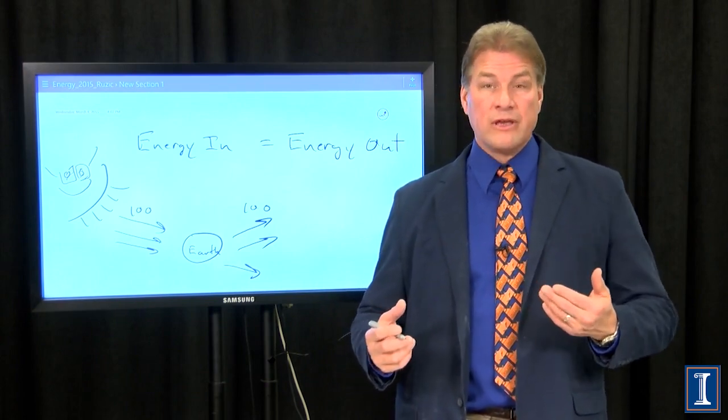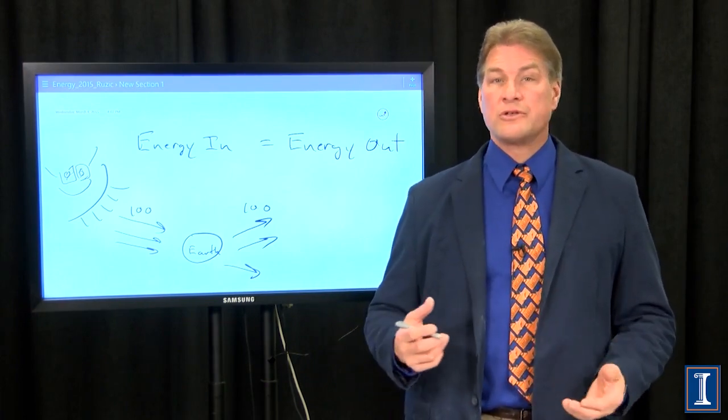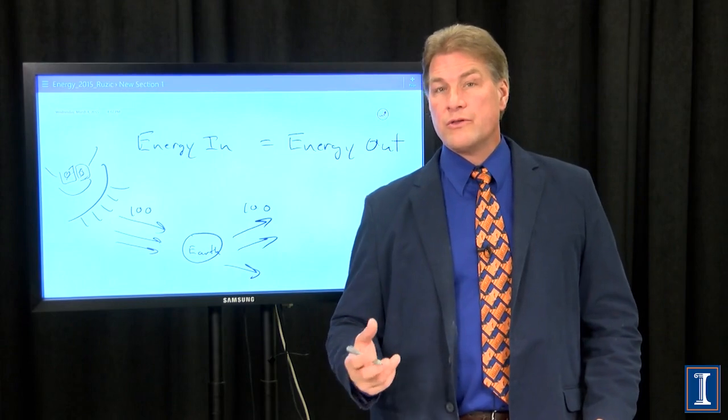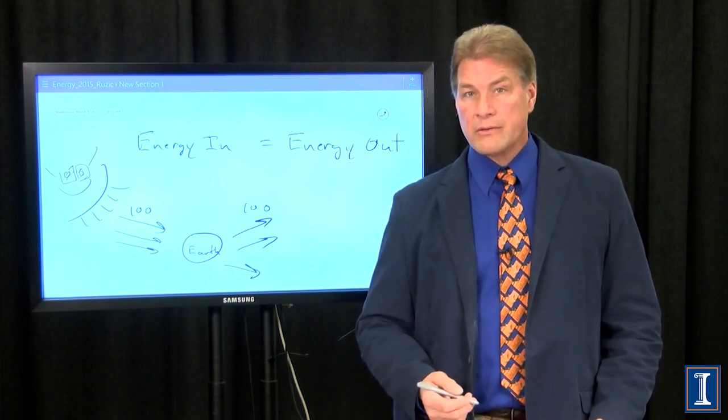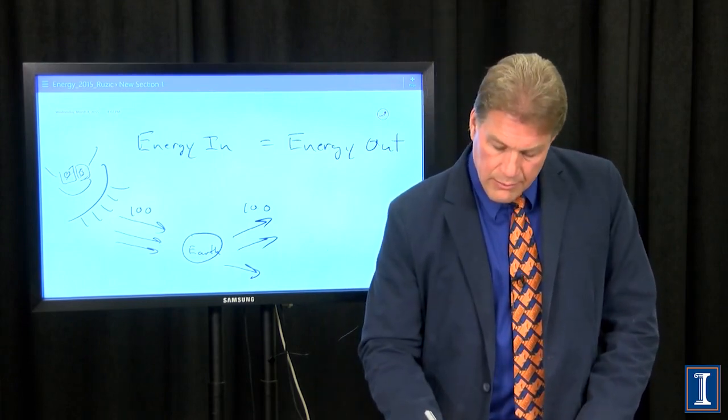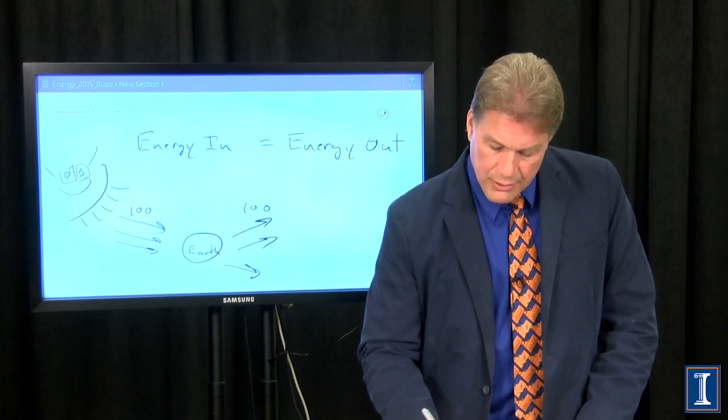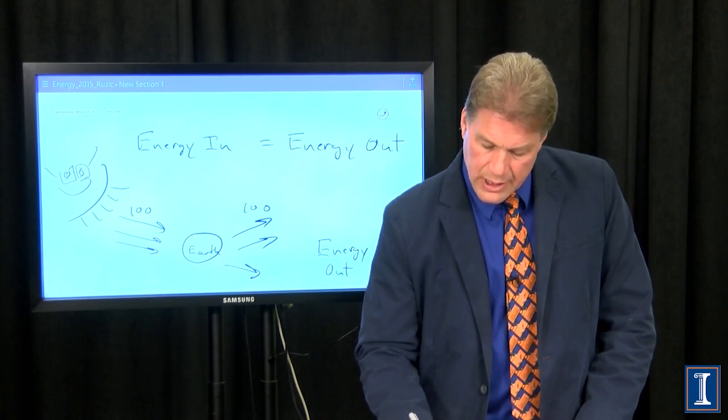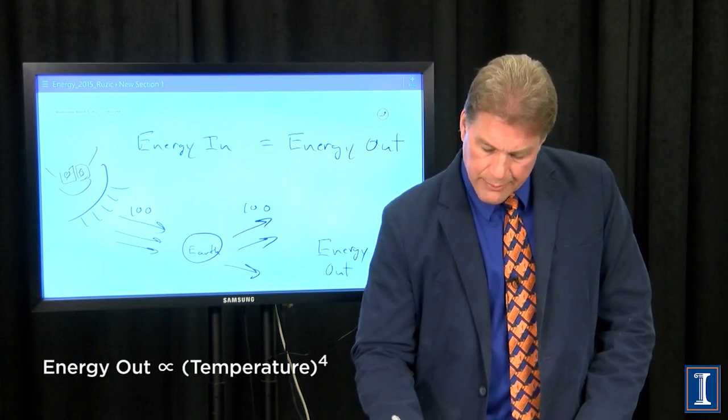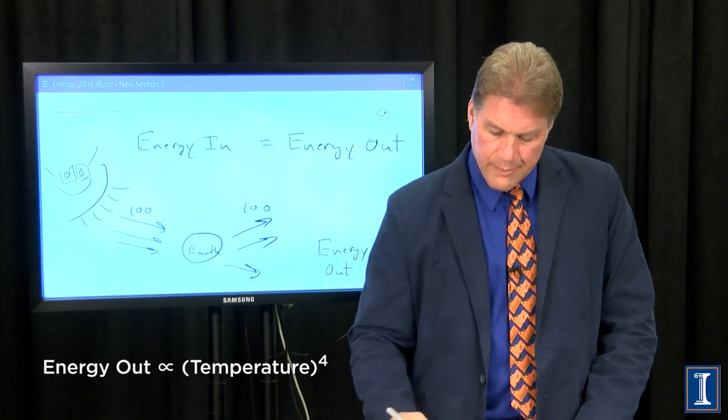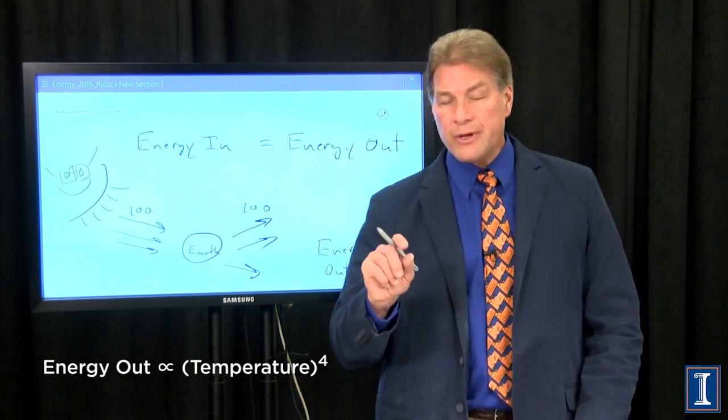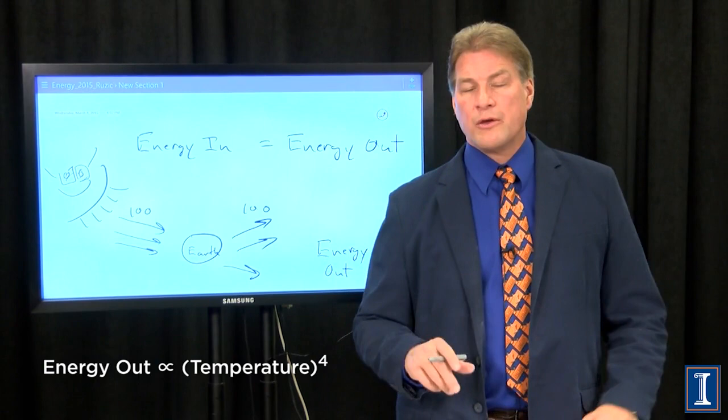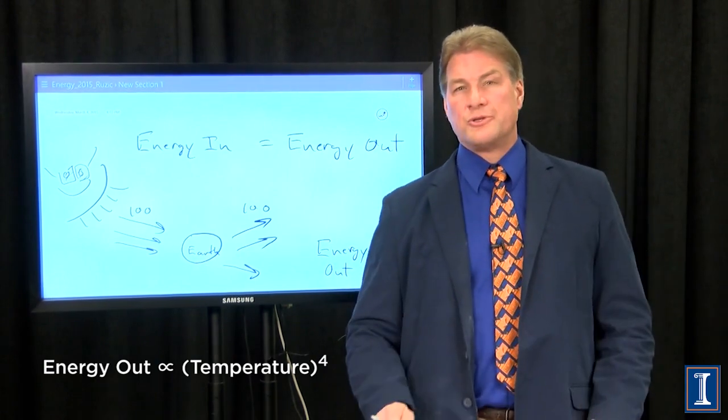For people, we give off infrared light because our temperature is around 40 degrees centigrade. The relation for energy out and temperature is one where the energy out given out by this radiation is proportional to the temperature to the fourth power. So very small changes in temperature can produce a big change in the energy that goes out.